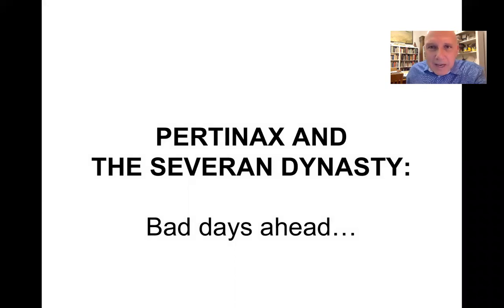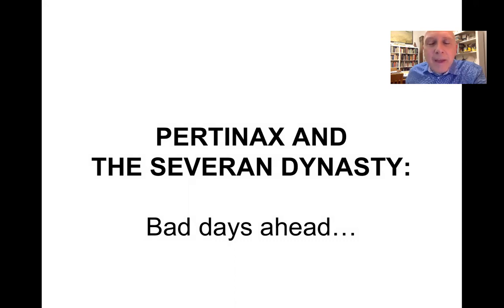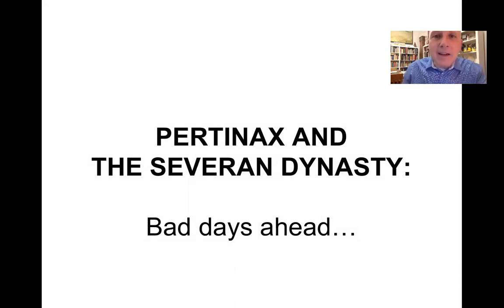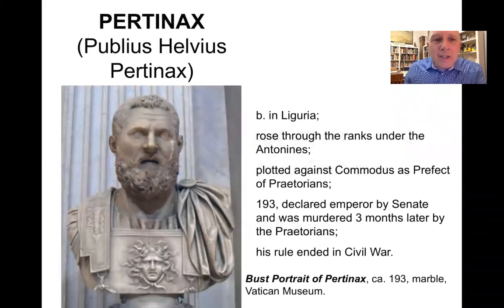The Severan dynasty takes its name from the Emperor Septimius Severus of the Severan family. But before we get to the Severans, we need to discuss an individual who is a transitional figure between the Antonines and the Severans — a man by the name of Pertinax, Publius Helvius Pertinax. Born in Liguria, he rose through the ranks of the Antonines.